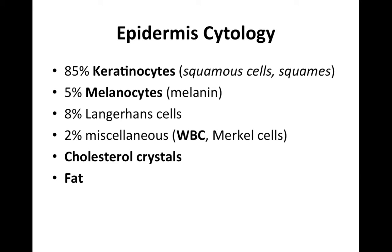In terms of breakdown of epidermis cytology and typical cell ratios: we often don't see Langerhans cells or Merkel cells in cytology — those are better seen in histopathology. For us, most of the time we're seeing keratinocytes — squamous-type cells, intermediate cells, basal cells, melanocytes, and some macrophages. The approximate breakdown is 85% keratinocytes, 5% melanocytes, 8% Langerhans cells, 2% miscellaneous including white blood cells and Merkel cells, plus cholesterol crystals and fat.